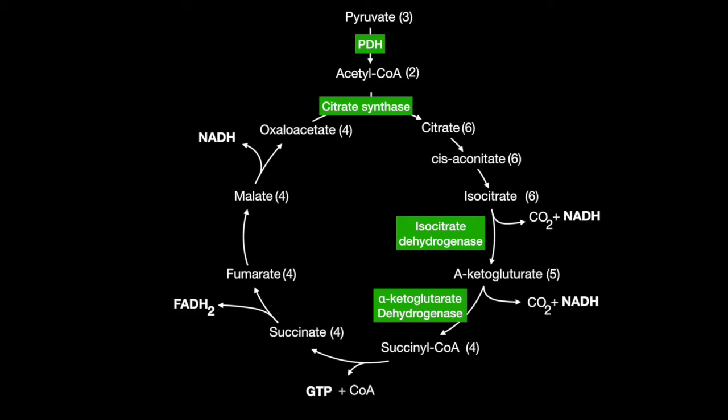Now, let's go over the regulation of the TCA cycle. Since the function of the TCA cycle is to make NADH and ATP, both of these are common inhibitors. Both inhibit pyruvate dehydrogenase. ATP inhibits citrate synthase. Both inhibit isocitrate dehydrogenase. And both also inhibit alpha-ketoglutarate dehydrogenase.